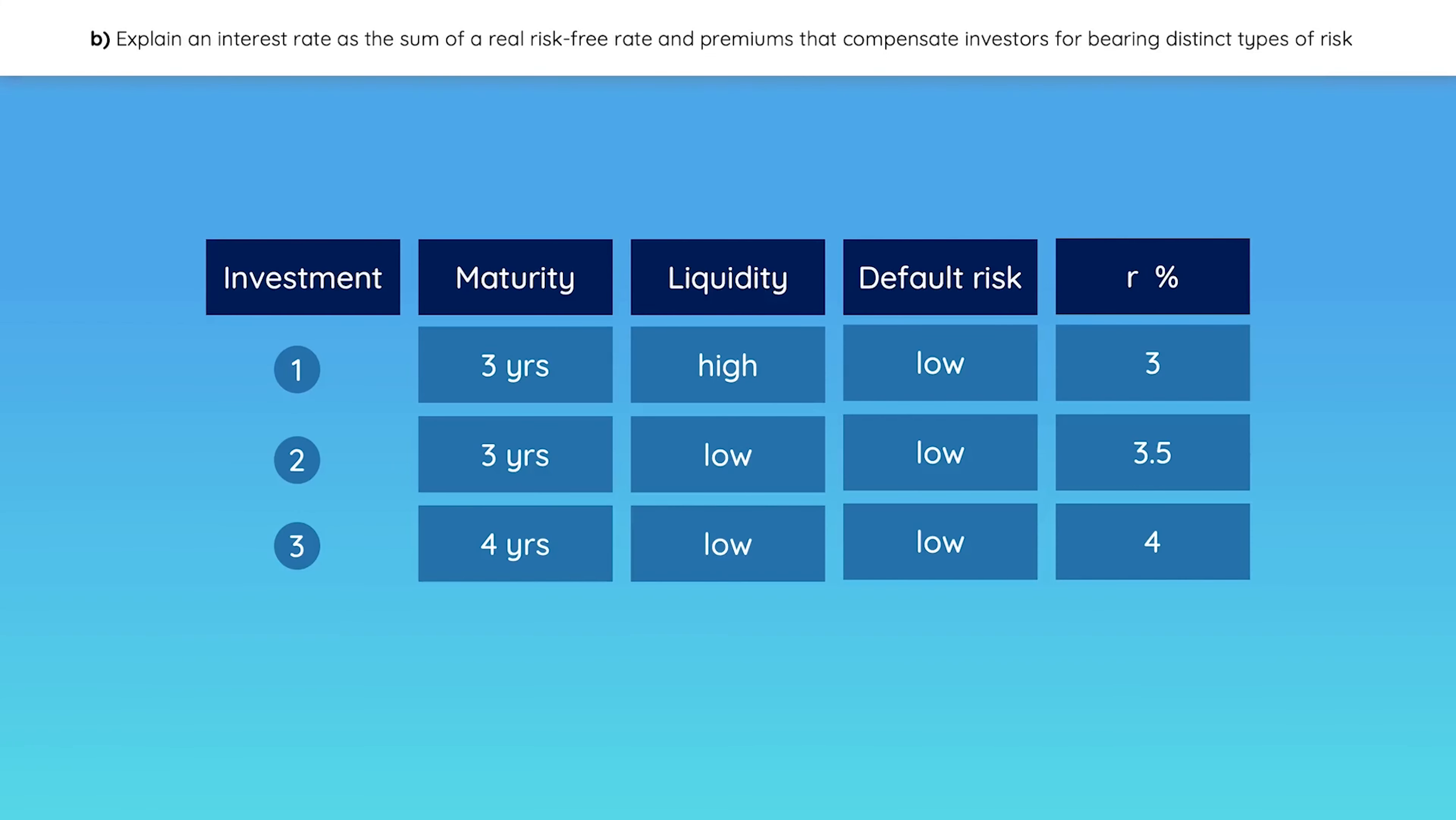Take a look at this table. What's the liquidity risk premium? Well, Investment 2 is identical to Investment 1, except for its low liquidity. So the difference between their returns is the liquidity premium. 0.5% is the extra amount that investors require because Investment 2 is less liquid.